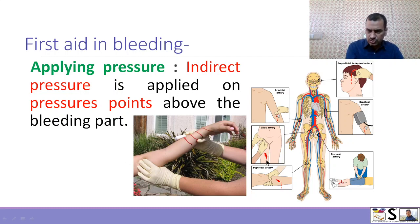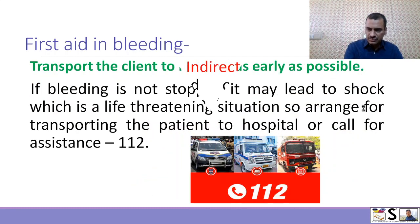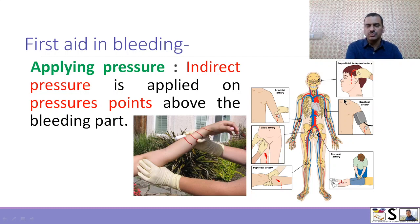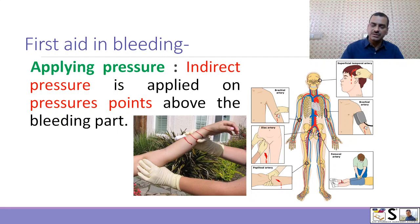For example, if bleeding is here, we apply pressure on the corresponding artery. Pressure points include the brachial artery, iliac artery, popliteal artery, femoral artery, and superficial temporal artery. We can control heavy bleeding by applying indirect pressure at these points.